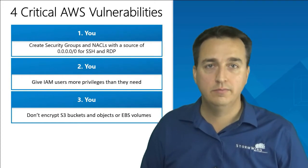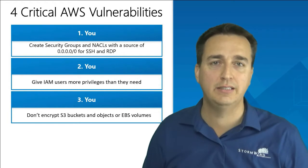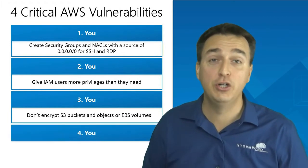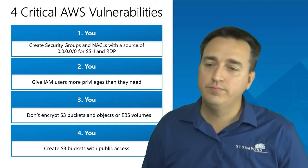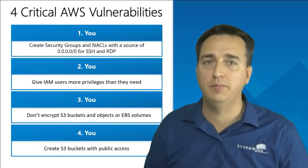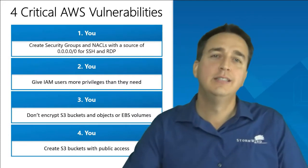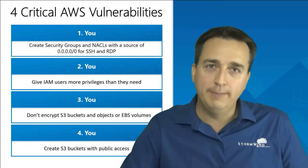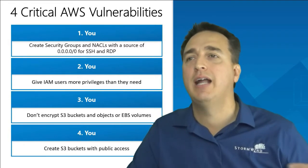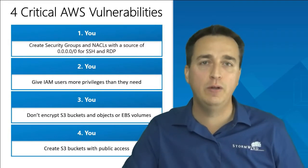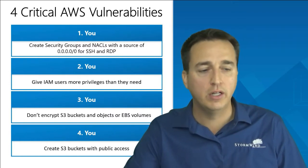Number four is also you. You create S3 buckets and grant them public access, meaning everybody in the entire world on the internet has access to your bucket. And numbers five, six, seven, eight, nine — all the way to infinity — it's you, you, you all across the board.